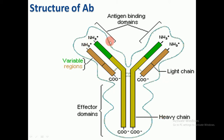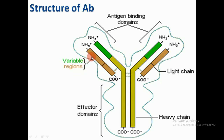Only the N-terminal end binds to the antigen, so it is called the antigen-binding domain, or the variable region. Each light chain consists of a variable region and a constant region. It is called the variable region because the amino acid sequence in this region changes, while in the constant region the amino acid sequence is stable and does not change.